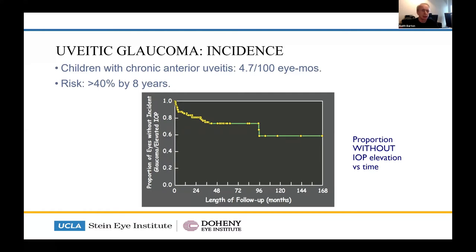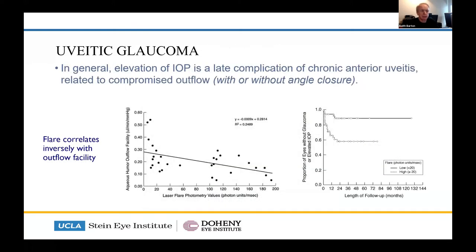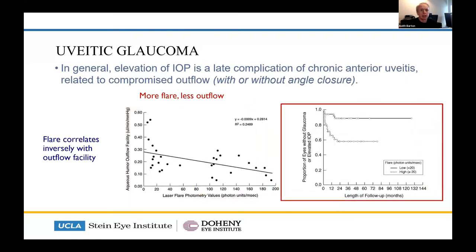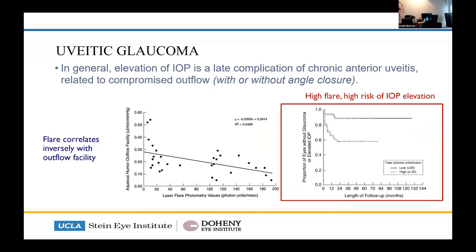Flare seems to correlate inversely with aqueous outflow — more flare, less outflow — and if you've got high flare you have a high risk of IOP elevation. This divides patients bimodally into those with high flare and low flare. The IOP elevation risk is going from about 10% to about 40% in those with high flare.